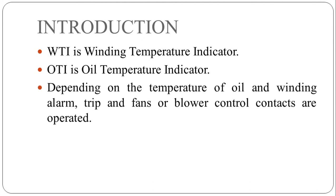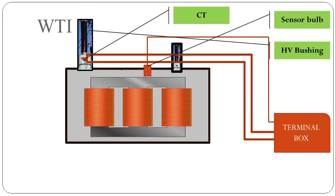Depending on the temperature of oil and winding, alarm trip and fan control contacts are operated. See this is the diagram of transformer. Here we can see that core and windings are enclosed inside the transformer tank. This is bushing of transformer and a current transformer is placed at the bottom of this bushing. The terminals from this current transformer are brought out to the terminal box and this is a sensor bulb. Now we will see the function of this current transformer and this sensor bulb.